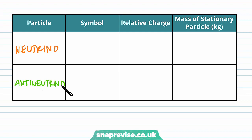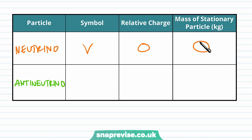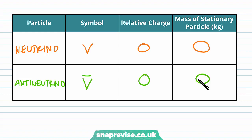The final particle-antiparticle pair is the neutrino and the antineutrino. The neutrino has symbol ν, zero charge, and zero mass — it's a massless, chargeless particle which we'll cover in more depth in later videos. The antineutrino has symbol ν̄; its relative charge is zero and its mass is also zero, so they are both massless, chargeless particles.